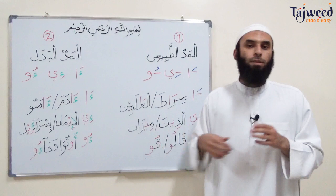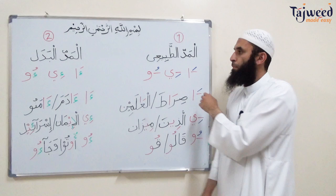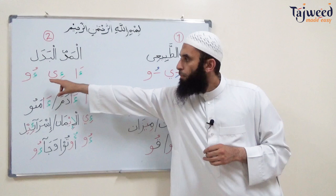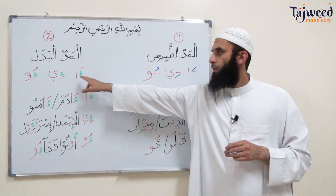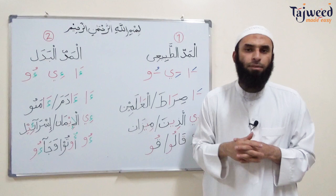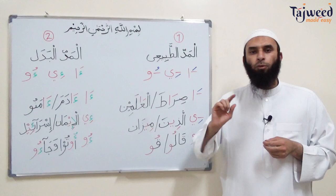Mad al-badal means to change or replace. It's the same stretching — two counts — but the difference is: in mad al-tabi'i, the letter before the alif can be any letter with a fatha. But in mad al-badal, the letter before the alif with sukun must specifically be hamza. For example, the word adama: hamza with fatha, then alif with sukun — two counts — adama. Originally in Arabic it was hamza-fatha then hamza-sukun: a-mana, but because this was heavy upon the Arabs, the second hamza changed to alif — a-mana.